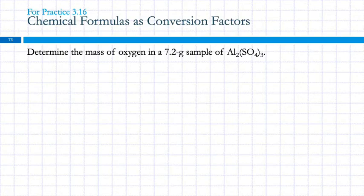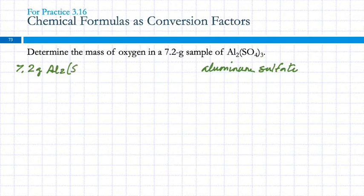So determine the mass of oxygen in a 7.2 gram sample of Al2(SO4)3. What would the name of that be? Aluminum sulfate. Does aluminum need a Roman numeral? No. Because it's in group 3, and it always has a 3+ charge. And we don't need to do anything with this 3. We don't need to say trisulfate, because it's the charges that tell us how many. So we've got 7.2 grams of Al2(SO4)3, and we're trying to find what? Mass of oxygen. I'm just going to erase this because it's in the way.